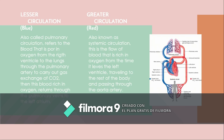Lesser circulation, also called pulmonary circulation, refers to the blood that is poor in oxygen flowing from the right ventricle to the lungs through the pulmonary artery to carry out gas exchange of CO2. Then this blood, now rich in oxygen, returns through the pulmonary vein to the left atrium. Greater circulation, also known as systemic circulation, is the flow of blood rich in oxygen from the time it leaves the left ventricle, traveling to the rest of the body through the aorta artery. In the image, the lesser circulation is shown in blue and the greater circulation in red.